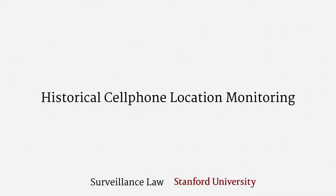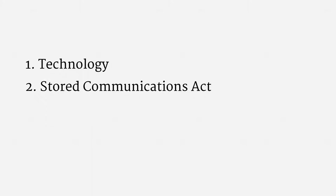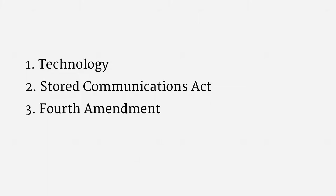In this pair of lectures, we're going to work through the law that applies to government tracking of cell phones. The first lecture addresses historical cell phone location records, and the next lecture explains prospective cell phone location tracking. I would like to proceed in four segments: the technology used for historical cell phone location tracking; the status of cell phone location data under the Stored Communications Act; the debate on whether the Fourth Amendment protects cell phone location information; and some data on historical cell phone tracking.